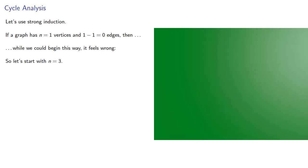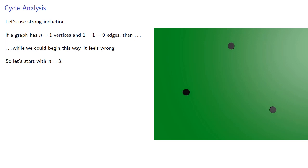So let's start with n equals 3. The theorem clearly holds for graphs with n equals 3 vertices and 2 edges because there's only one such graph.